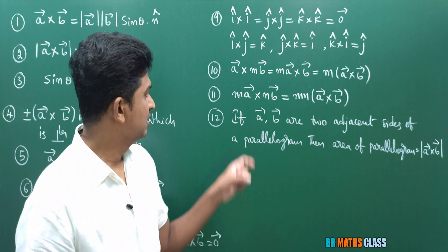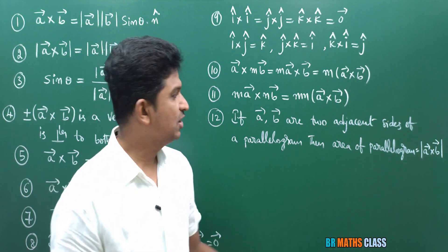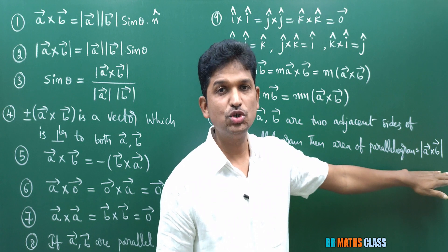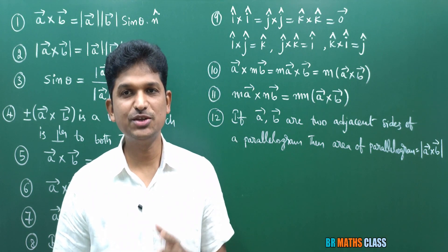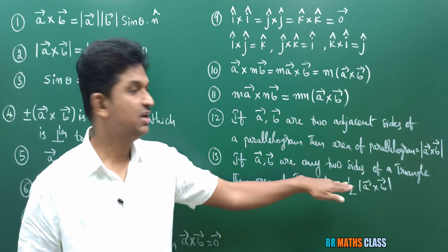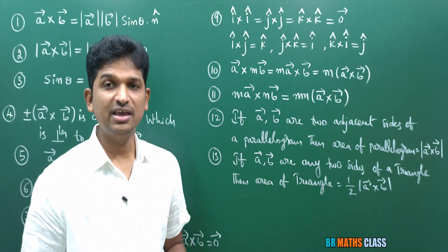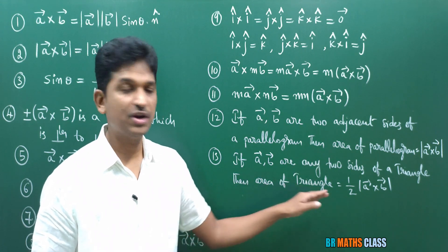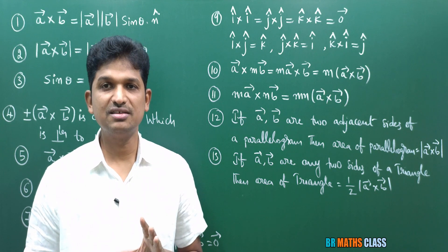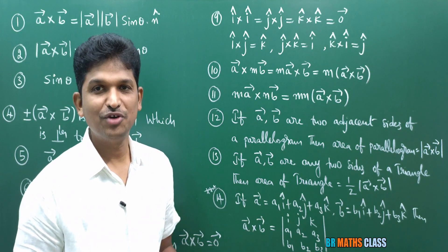Formula 12: if A bar and B bar are any two adjacent sides of a parallelogram, then the area of that parallelogram equals the magnitude of A bar cross B bar. Formula 13: if A bar and B bar are any two sides of a triangle, then the area of that triangle equals half times the magnitude of A bar cross B bar. These two formulas were derived in earlier classes. If you are thorough in all 14 formulas, you can do exercise problems very easily.